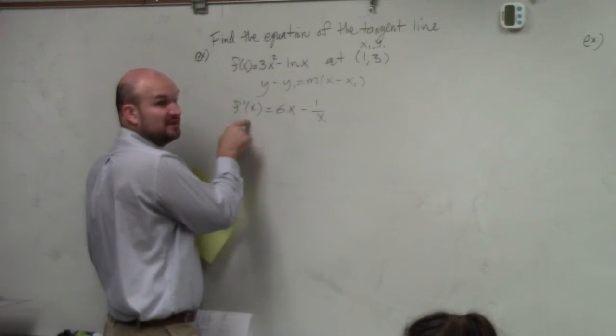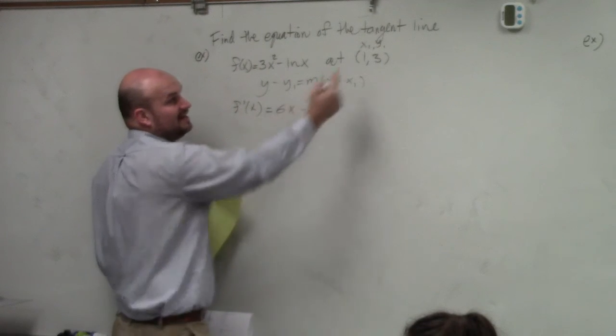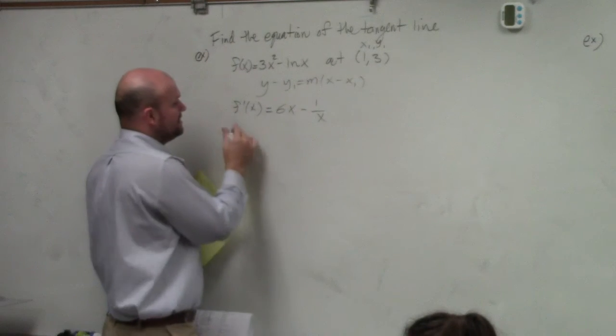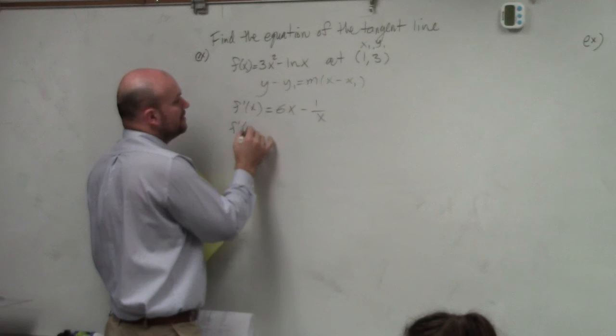And then I need to find the derivative, the slope of the line at this point, 1 comma 3. So then I just do f of 1.